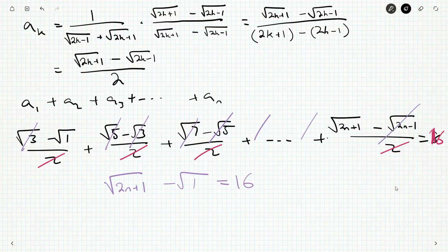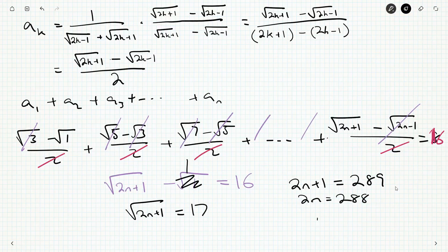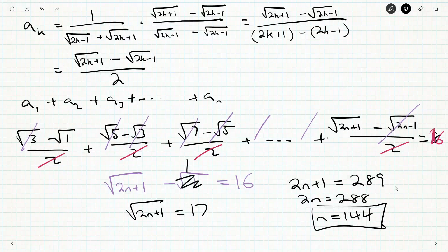All right. So, well, this guy here is 1. So we get root 2n plus 1. I'm bringing the minus 1 over to the other side is equal to 17. Square both sides. We'll get 2n plus 1 is equal to 17 squared is 289. So 2n is 288. And n is going to be 144. We've got our final answer. We've justified it.